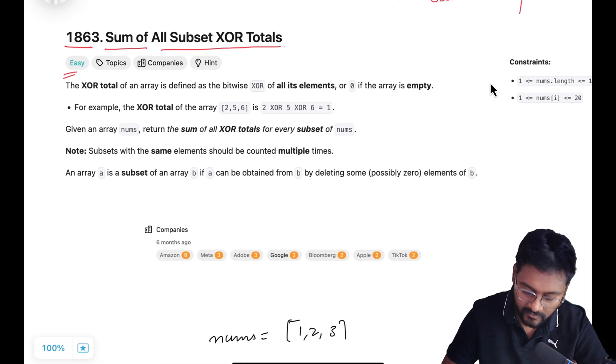This problem is marked as easy and it is based on backtracking. It's asked in a lot of theory companies like Amazon, Meta, Google, Adobe, Bloomberg, Apple, and TikTok.